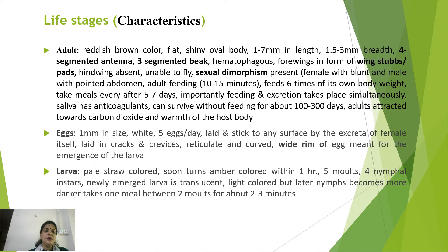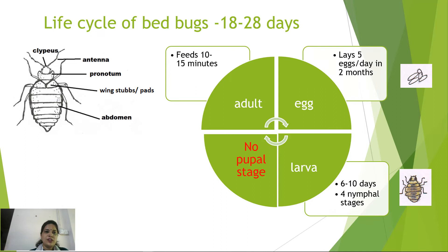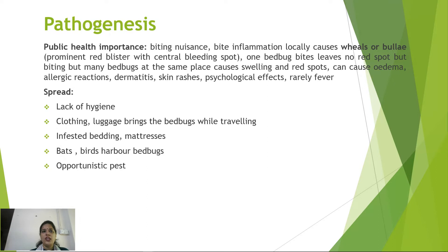Bed bug eggs are 1 mm, white, and laid at a rate of five per day, stuck to surfaces by female excreta in cracks and crevices. Eggs have a wide rim for larval emergence. Newly emerged larvae are pale straw-colored, turning amber within an hour. There are four nymphal instars; early nymphs are translucent and later stages darken. Each nymph takes one blood meal of two to three minutes between molts. The life cycle takes 18 to 28 days; there is no pupal stage.